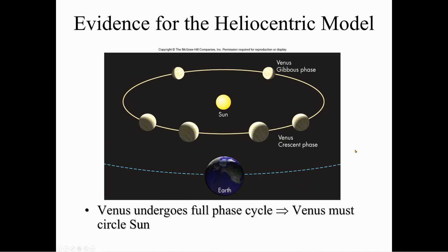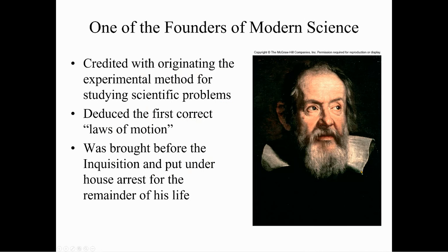How did he prove that the sun was the center and not the earth? He proved this by watching Venus go through its phases. Venus undergoes a full phase cycle, which meant Venus had to circle the sun and not the earth.